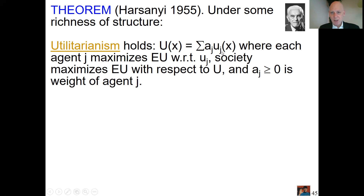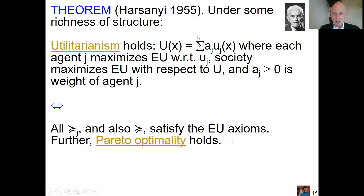The model is a bit strange because it treats every individual's utility independently without interaction with others. You immediately see it is a rather restricted model — it has separability, just a weighted sum rather than a product or anything else. It is a peculiar model. Harsanyi's theorem states that this utilitarian approach holds if and only if we have expected utility maximization for everyone plus Pareto optimality — and that is it. These conditions are necessary and sufficient, which feels immediately strange because the conditions seem completely unobjectionable.